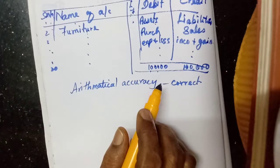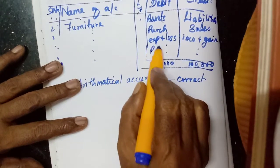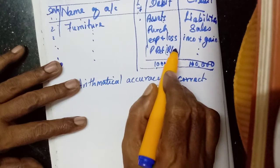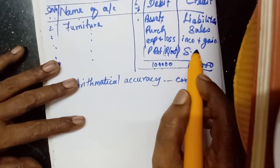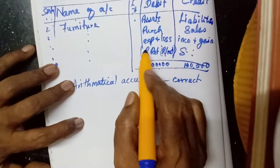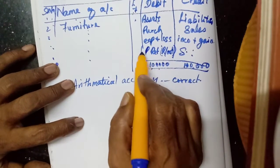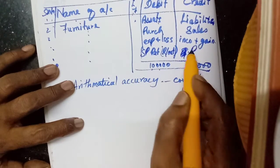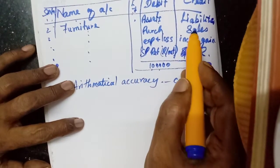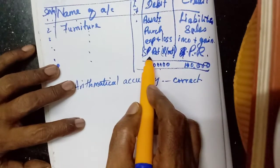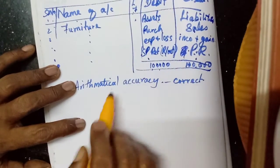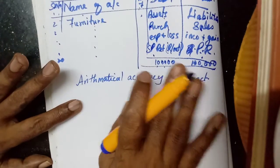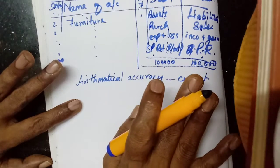If purchases is debited, then purchase returns will be credited — also called return outward. Sales return will be debited, and purchase return will be credited. So: sales credited, sales return debited, purchases debited, purchase returns credited. You just need to learn whether each item is debit or credit.